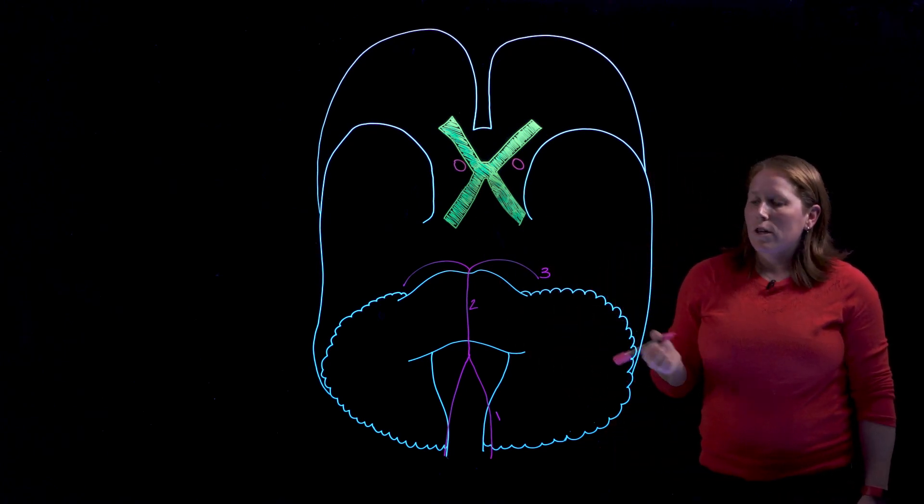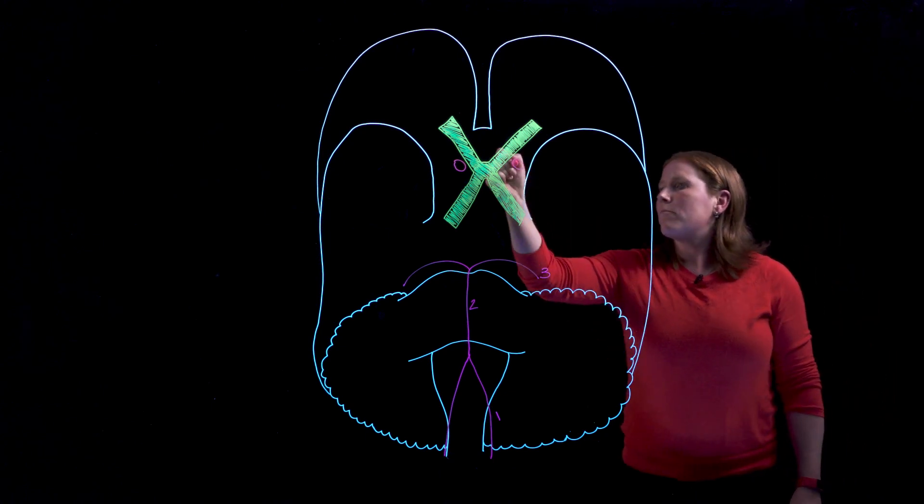We always draw the internal carotid arteries as open holes because we have to show that this artery has been cut in order to actually remove the brain from the skull and so you're going to get used to this kind of marking.